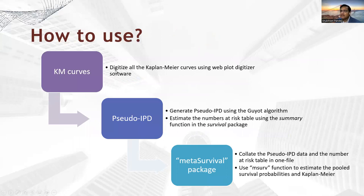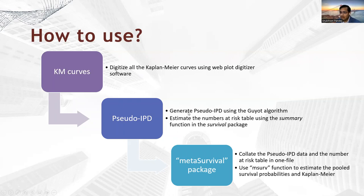Coming on to how to use this package: assuming you have Kaplan-Meier curves from different published sources, the first step is to digitize all the Kaplan-Meier curves using any WebPlot Digitizer software and arrange that data in the format used by the Giot algorithm. Then you generate the pseudo IPD using the Giot algorithm. The second step is to generate the pseudo IPD. The third step is: if a number-at-risk table is given in the published paper, that is fine; if not, you have to estimate the number-at-risk table using the summary function in the survival package, because the MetaSurvival package takes the number-at-risk table as one of the inputs.